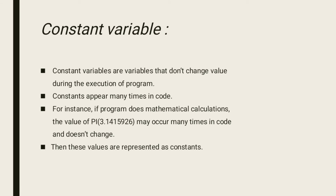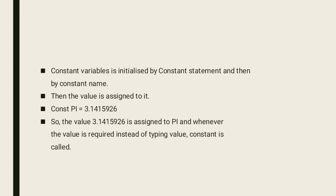Constant variables are variables that don't change value during the execution of a program. Constants appear many times in code. For instance, if a program does mathematical calculations, the value of PI 3.1415926 may occur many times in code and doesn't change. These values are represented as constants. A constant variable is initialized by the constant statement followed by the constant name, then the value is assigned to it. For example, Const PI = 3.1415926. Whenever the value is required, instead of typing the value, the constant is called.